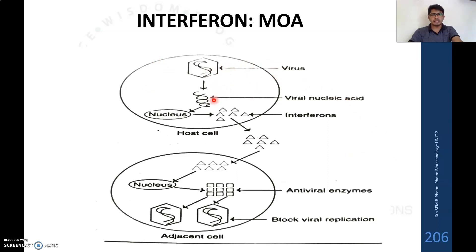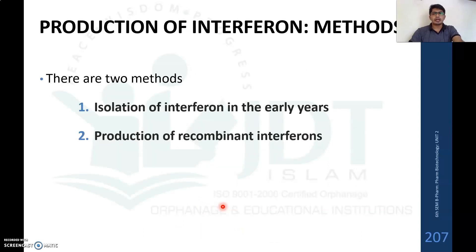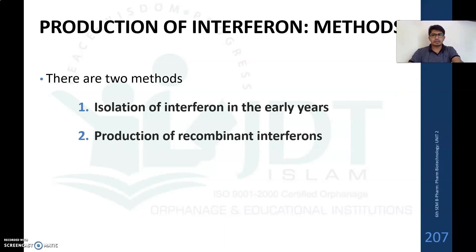When a virus infects a cell, the viral nucleic acid stimulates the nucleus to produce interferons. These interferons, synthesized by the virus-infected cell, bind with adjacent uninfected cells and stimulate the nucleus of those cells to produce an antiviral enzyme — the translation inhibiting protein, a group of three enzymes — thereby blocking viral replication in the adjacent cells.